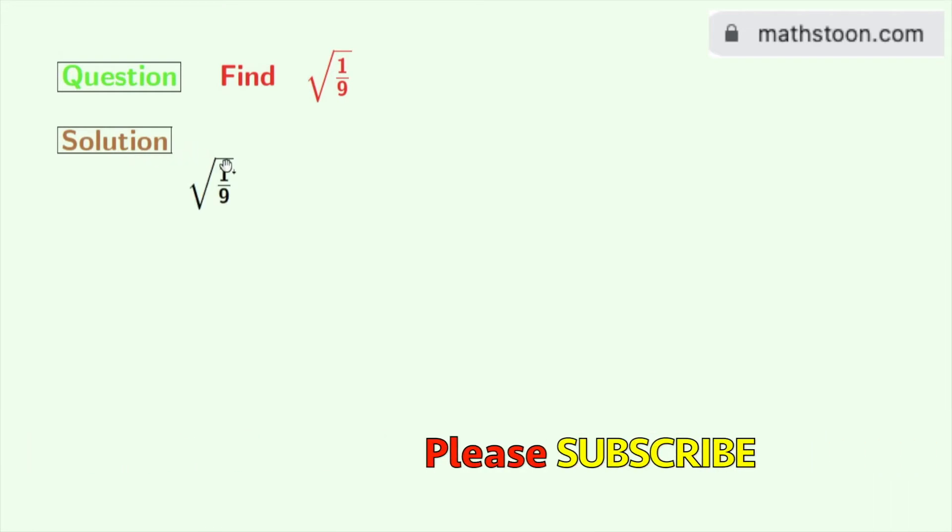So our given square root is square root of 1 by 9. Now we will rewrite this as square root of 1 divided by square root of 9. As we all know that square root of a by b is equal to square root of a divided by square root of b. Here a is 1 and b is 9.